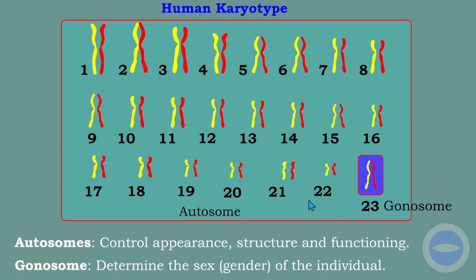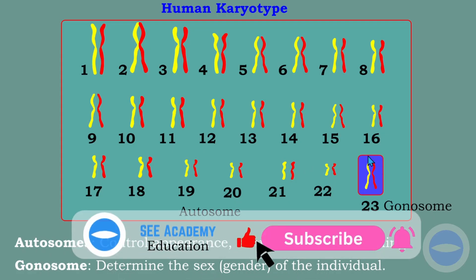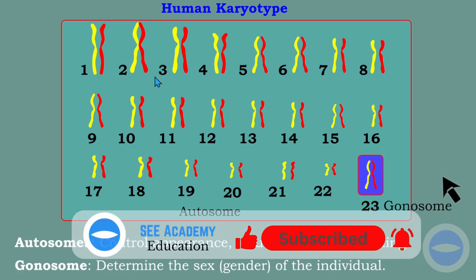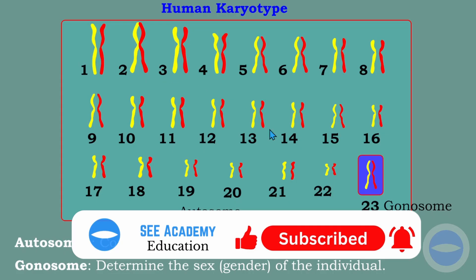The function of autosomes is to control the appearance, structure, and functioning of the body. Gonosomes are the sex chromosomes, and their function is to determine the sex or gender of an individual. These chromosomes are the ones that determine the gender of an individual.